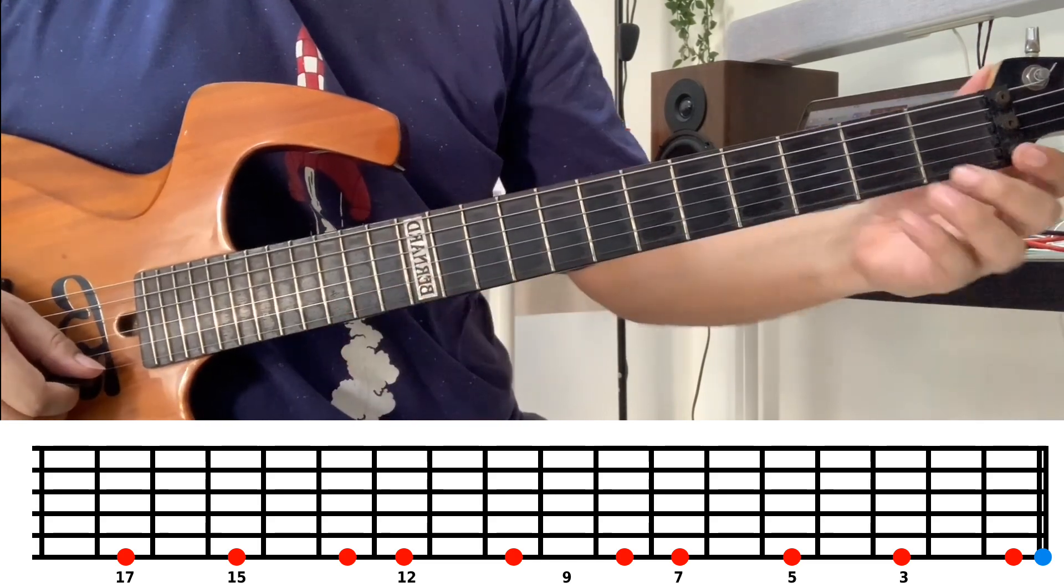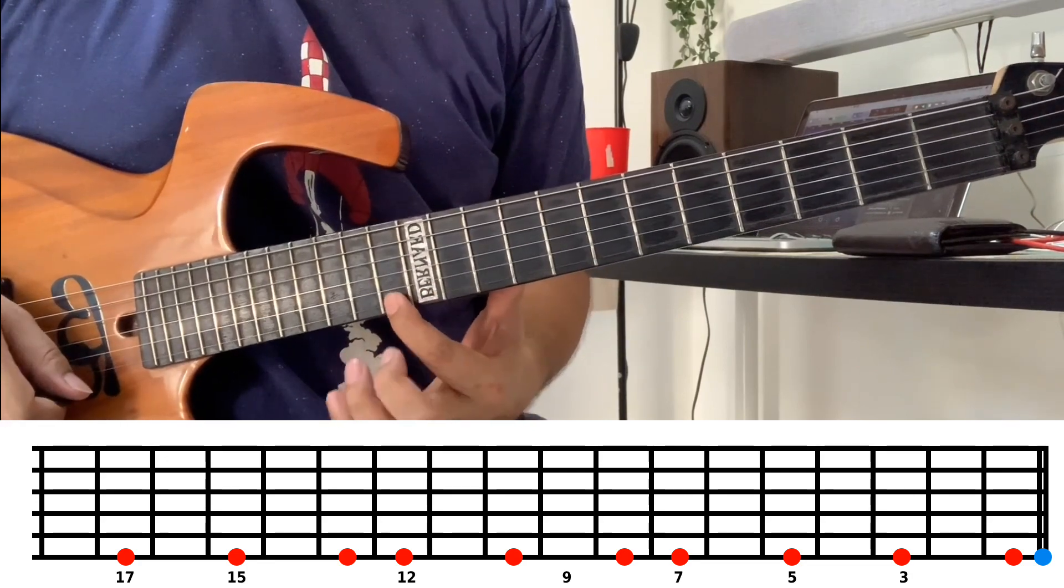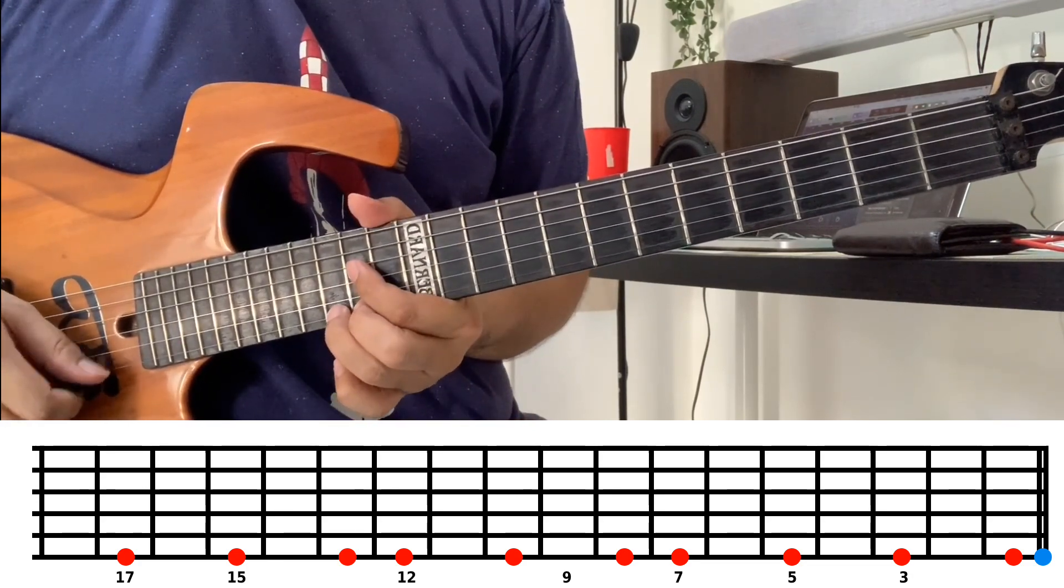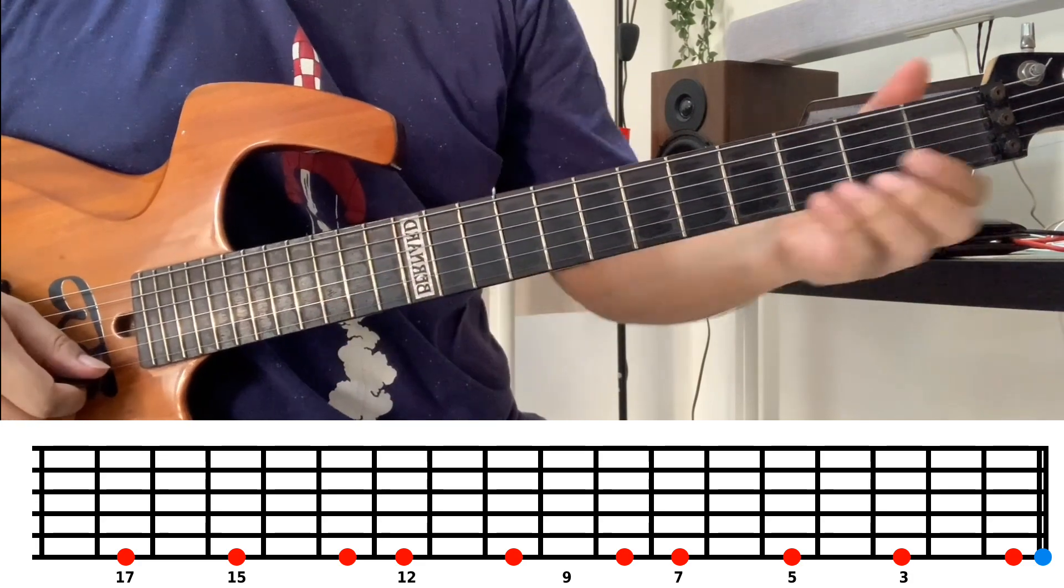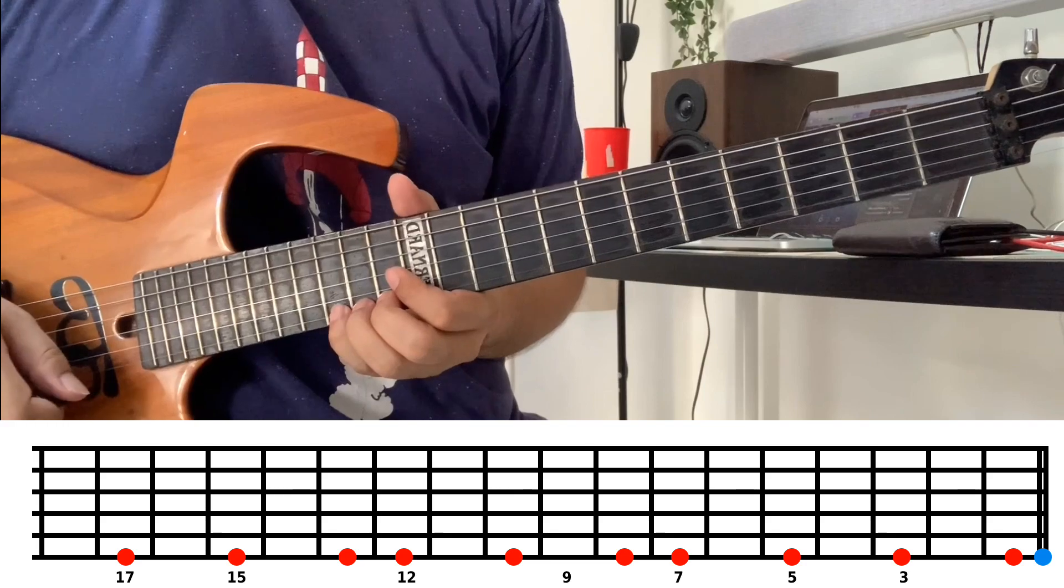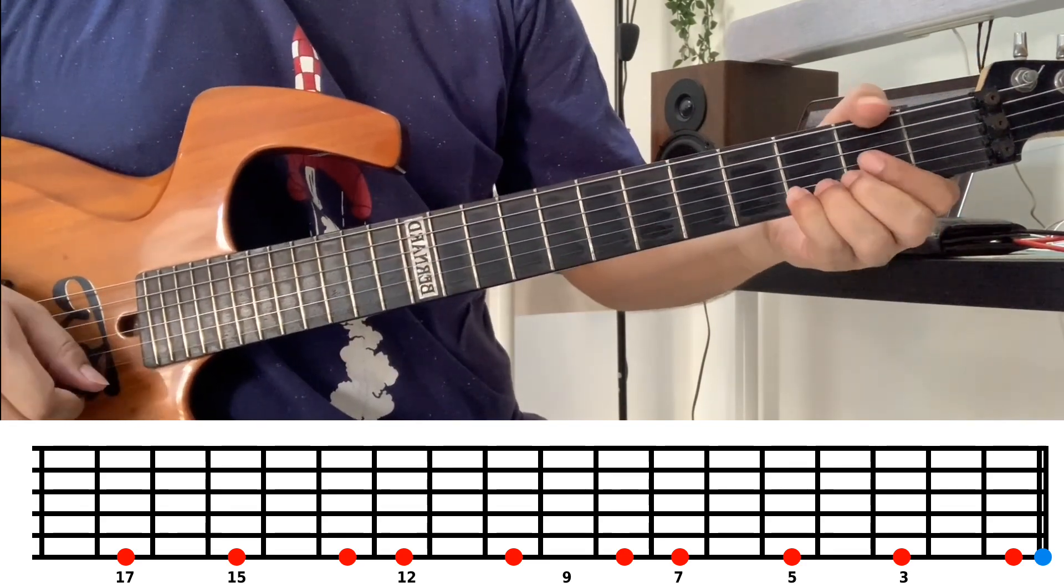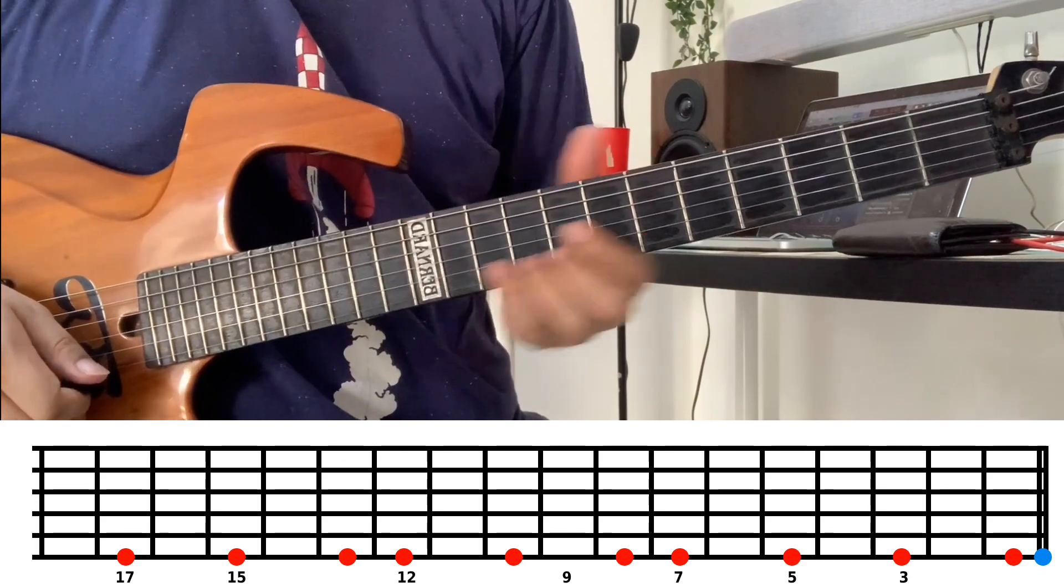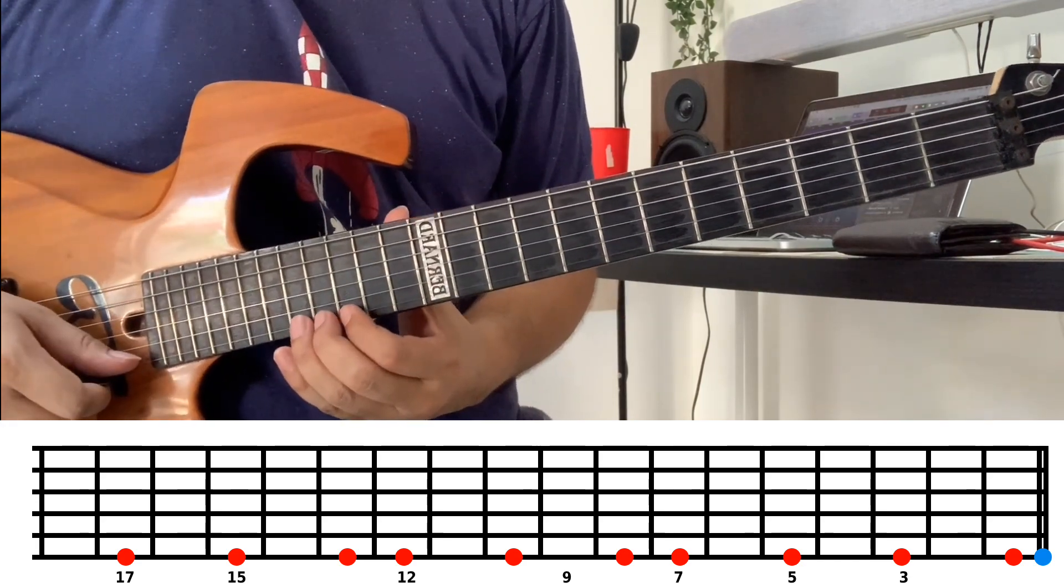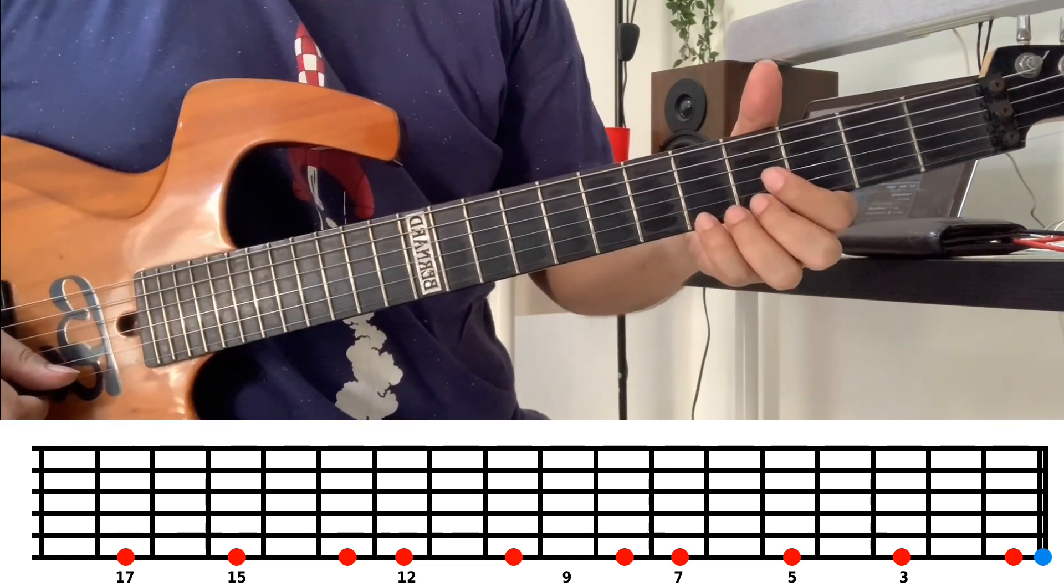So fret one is the same as fret thirteen - both are F. If I'm at fret fifteen, the easy way is to subtract twelve. So this is fret three. Then the last one is fret seventeen. Seventeen minus twelve means fret five, which is note A.